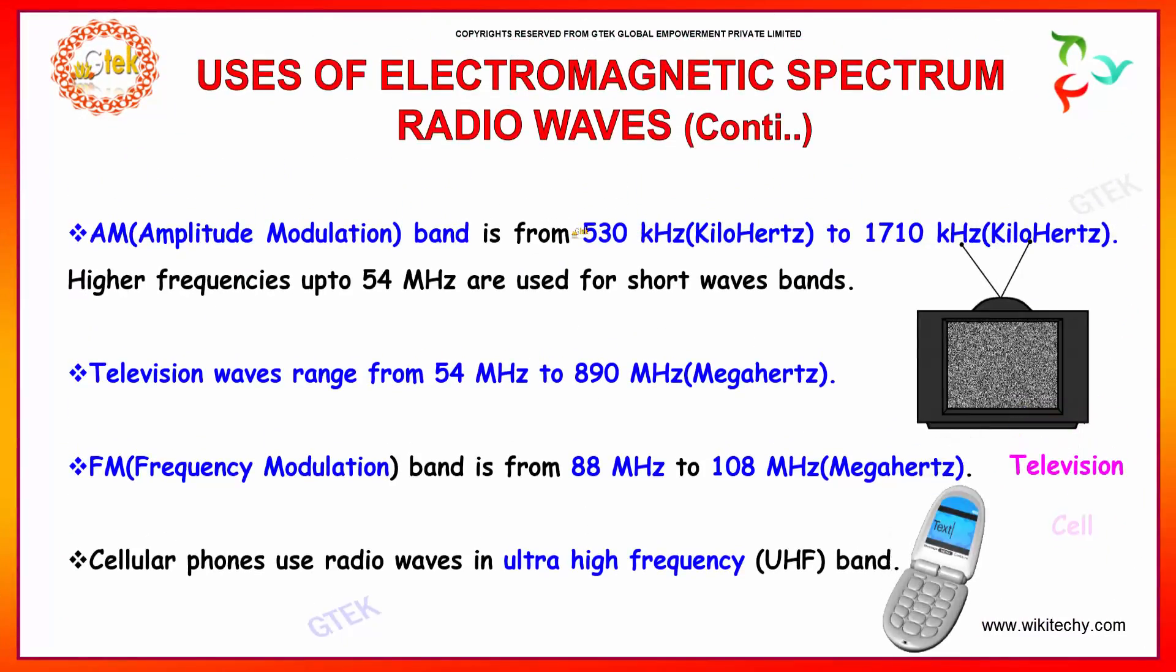Now we will talk about radio waves and amplitude modulation. The radio waves are passed through amplitude modulation, AM, which is a band of 530 kHz to 1710 kHz, and higher frequency up to 54 MHz in short wave bands.